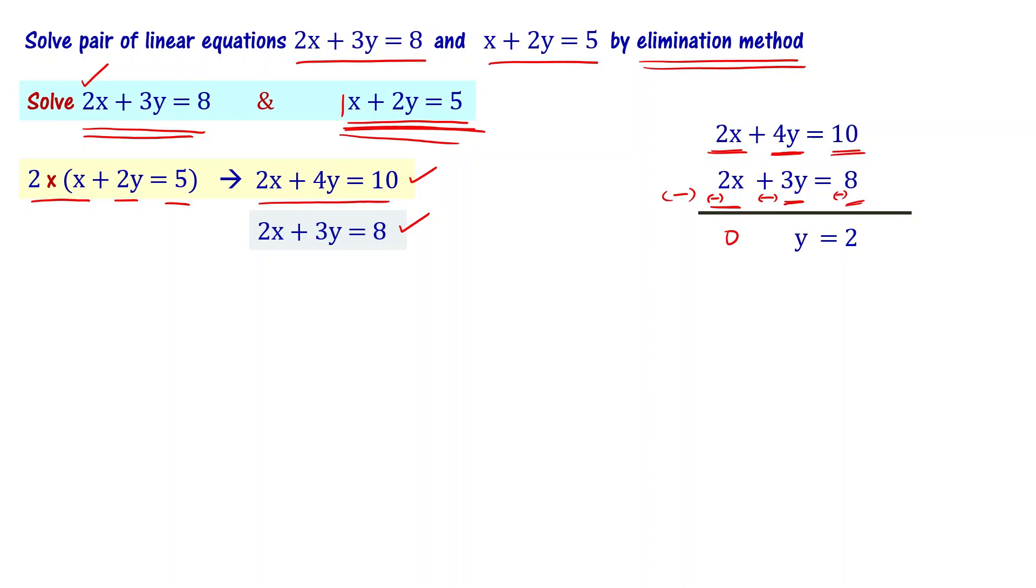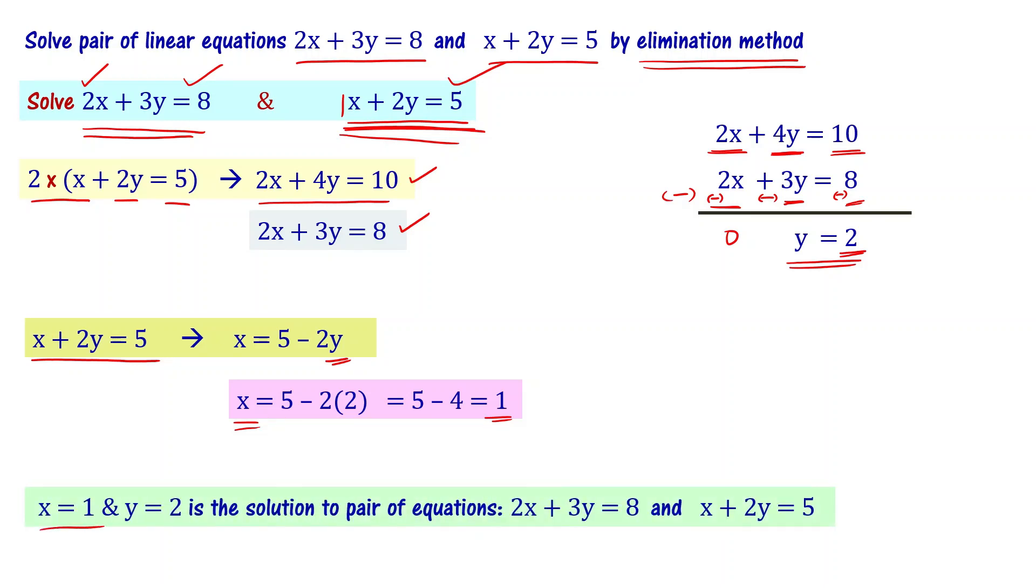We want to substitute the y value in the second equation. x plus 2y equal to 5. x equal to 5 minus 2y. If y value is 2, substitute that: 5 minus 2 into 2, which is 5 minus 4, that is equal to 1. So x equal to 1 and y equal to 2 is the solution for the given set of equations.